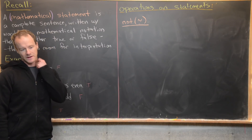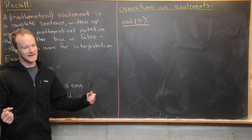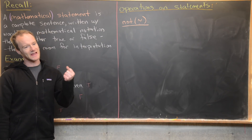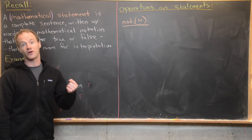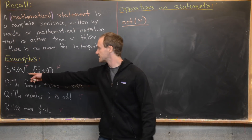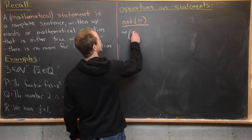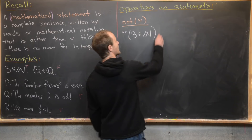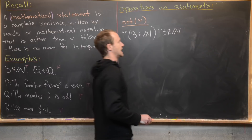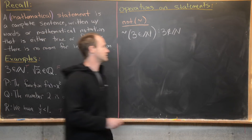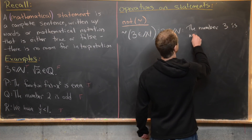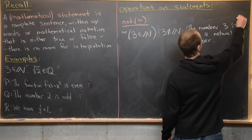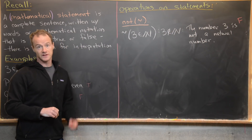Now let's look at the NOT statement. While AND and OR are binary operations taking two inputs, NOT is a unary operation taking only one input. It inverts the truth of a statement. For example, NOT(three is a natural number) gives 'the number three is not a natural number' — which is false. So negating a true statement gives a false statement.